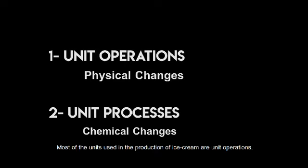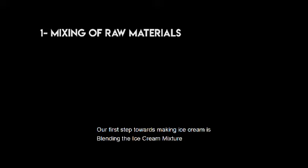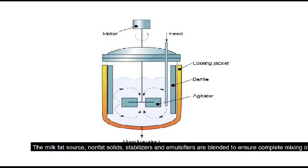Most of the units used in the production of ice cream are unit operations. Our first step toward making ice cream is blending the ice cream mixture. The milk fat source, non-fat solids, stabilizers, and emulsifiers are blended to ensure complete mixing of liquid and dry ingredients.